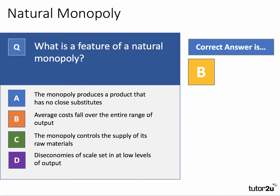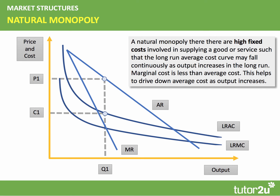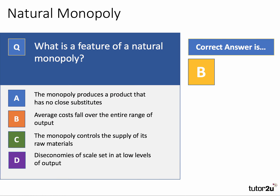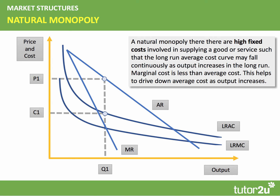The correct answer is B — it's the main feature of a natural monopoly. A natural monopoly is where the very high fixed costs of establishing, for example, the network to build and supply a good or service — such as the underground or the network of pipes in the water industry. Fixed costs are high, marginal costs are quite low, and as a result marginal cost is less than average cost, which drags down average cost so it falls across the full range of output.